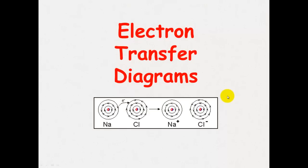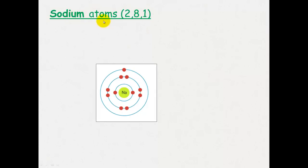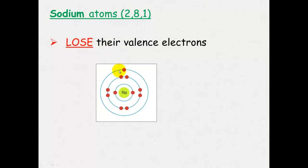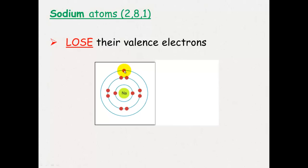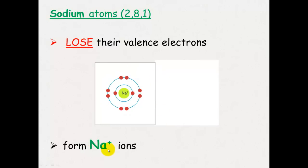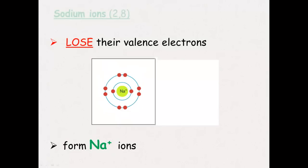We can demonstrate this using electron transfer diagrams, and this is how ionic bonds form between ions. A sodium atom has an electron configuration of 2, 8, 1. It wants to lose its valence electron — it's in group one — so it loses that electron. It forms a sodium one-positive ion, and that atom now becomes a sodium ion with a 2, 8 electron configuration.